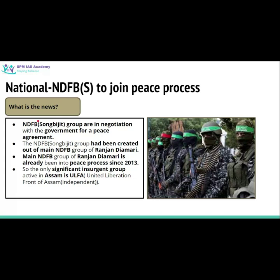The news is that one faction of NDFB, known as NDFB-S — where S stands for Songbijit, the leader of this group — has now entered into negotiation with the Government of India for a peace agreement. This NDFB-S is a breakaway faction from the main NDFB group of Ranjan Daimary. The main NDFB group had already entered into a peace process way back in 2013 itself. But the NDFB-S or Songbijit faction was still involved in terrorism and insurgency.